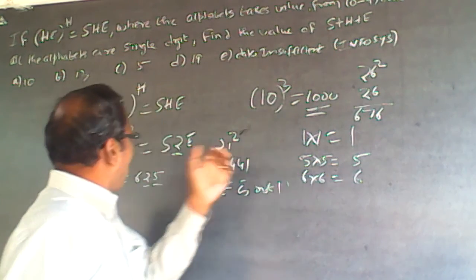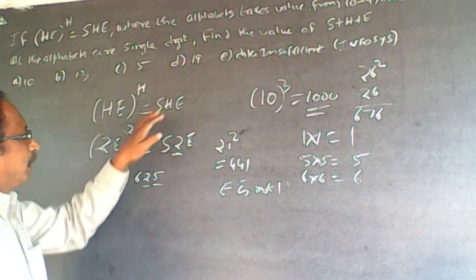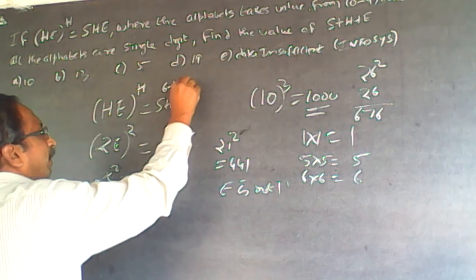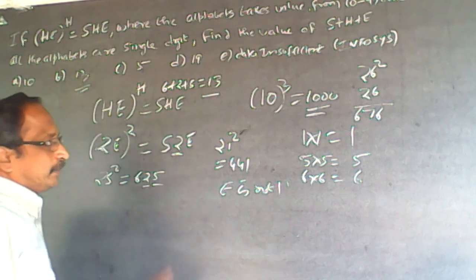Therefore the answer is 25 square which is 625. So the value of S plus H plus E will be 6 plus 2 plus 5 will be 13. The answer is 13. As simple as this.